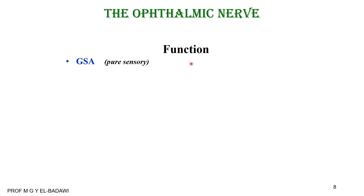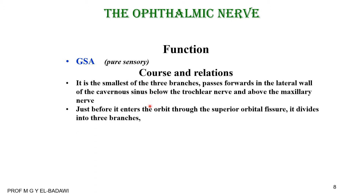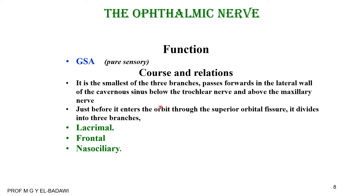The ophthalmic division: it is a pure sensory nerve — general somatic afferent. It is the smallest of the three branches. It passes in the lateral wall of the cavernous sinus, below the trochlear nerve and above the maxillary nerve. Just before entering the orbit through the lateral part of the superior orbital fissure, it divides into its three terminal branches: the lacrimal, the frontal, and the nasociliary.